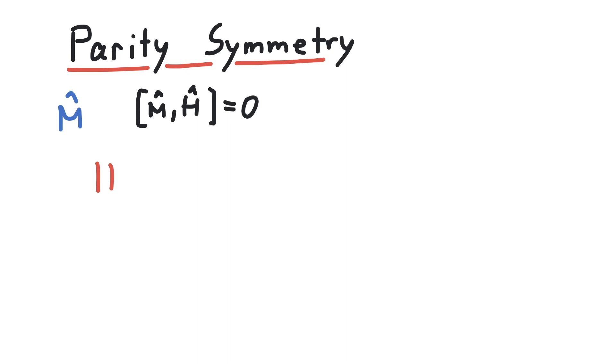So let's look at the parity operator pi. It acts in the following way on a function. If pi acts on a function f of x, we will get f of minus x.